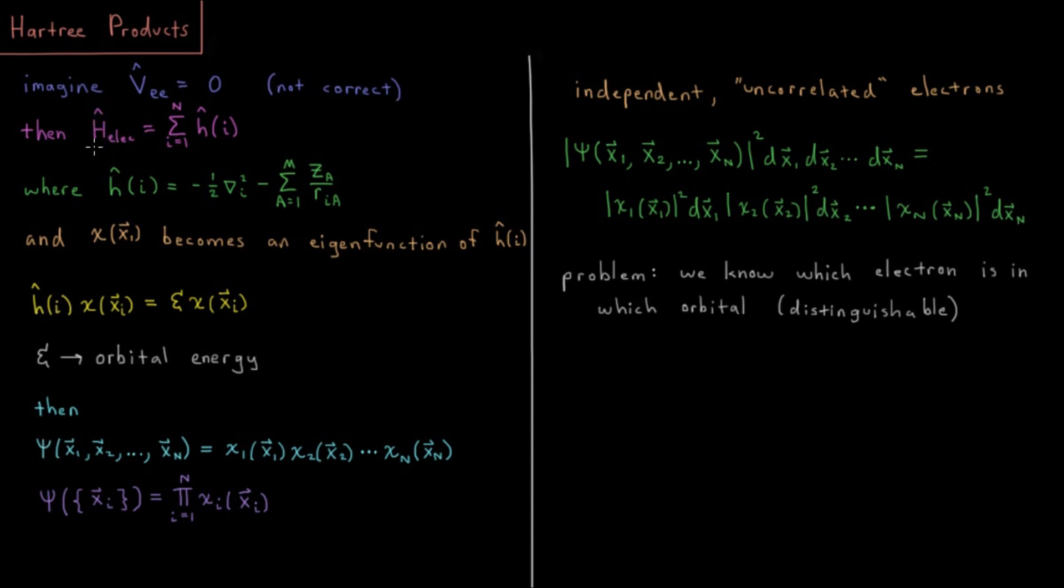In that case, whenever we can separate our Hamiltonian into a sum like this of functions of one particle at a time, we saw in the quantum chemistry playlist how this leads us to be able to then write our wave function as a product of all of those one-electron, or all those one-particle functions.